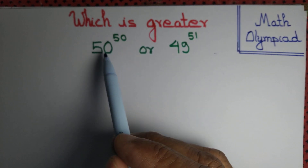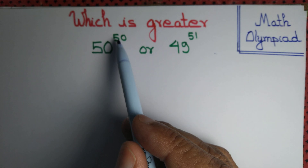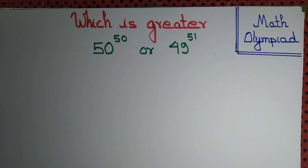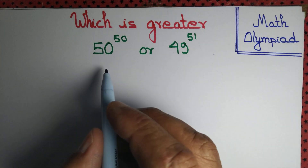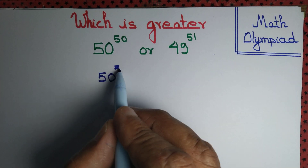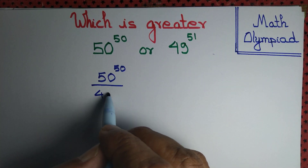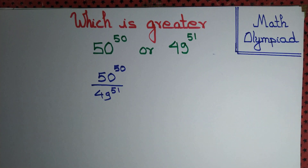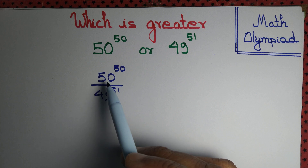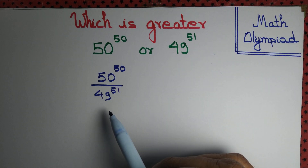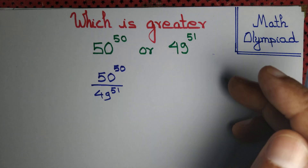Let's determine which is a bigger number: is 50 to the power 50 bigger, or 49 to the power 51 bigger? It is sufficient to know if the ratio 50^50 divided by 49^51 is bigger than 1 or less than 1. If this ratio is bigger than 1, the numerator is bigger; if less than 1, the denominator is bigger.